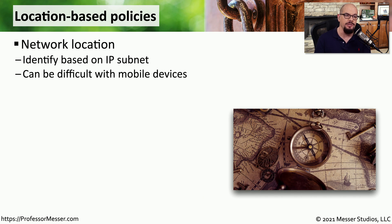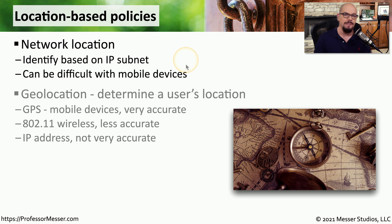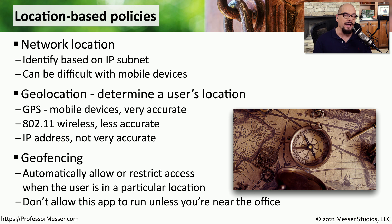We can also use someone's location to set policies on whether they might have access to a system. This could be done with IP addresses or IP subnetting, especially if the user is on a subnet inside our building. But once someone leaves the building and is outside of our control, we may not be able to use network location as a policy. Instead, we may want to take advantage of geolocation, which can use GPS coordinates, the 802.11 wireless network someone is connected to, or the IP address of where someone is connecting from. Each of these has different levels of accuracy, but combined they give a good idea of where someone might be.